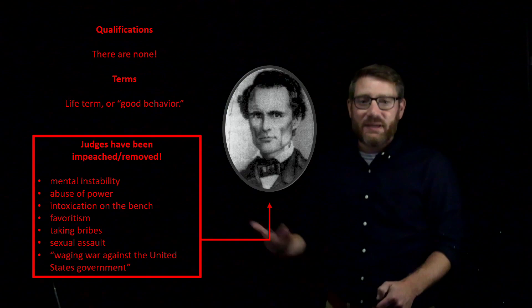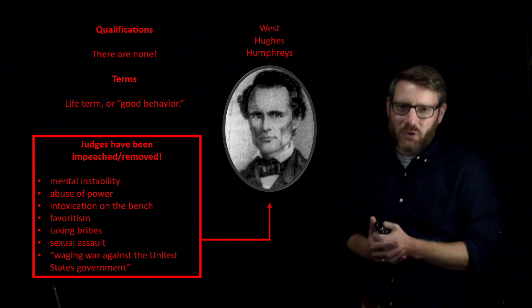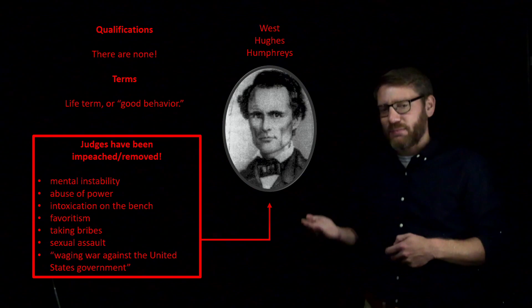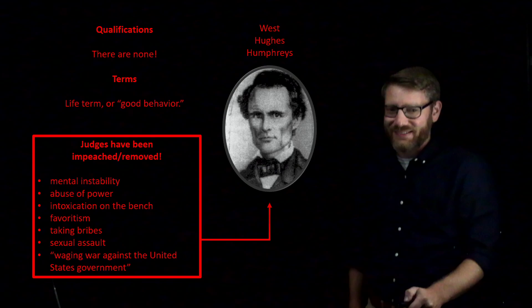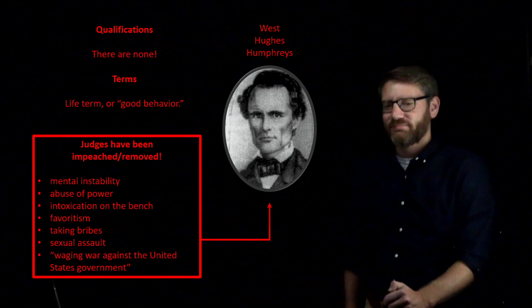One judge was even removed for waging war against the United States government. His name was West Hughes Humphreys — he was a pro-Confederacy judge around the time of the Civil War. The Confederacy lost, and obviously if you're going to support the South against the North, which had the Constitution, you're probably unfit to continue being a judge after the Civil War.